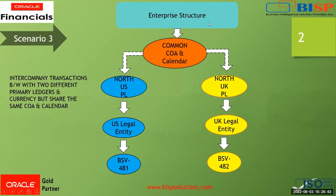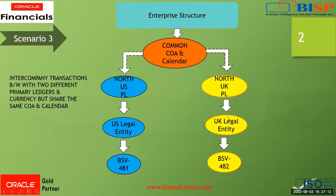This is the enterprise structure where the common chart of accounts is there and the calendar is the same but the currency is different. We have a North US primary ledger and a North UK primary ledger grouped under their respective legal entities. The primary balancing segment value of North US primary ledger is 481 and the North UK primary ledger primary balancing segment is 482.